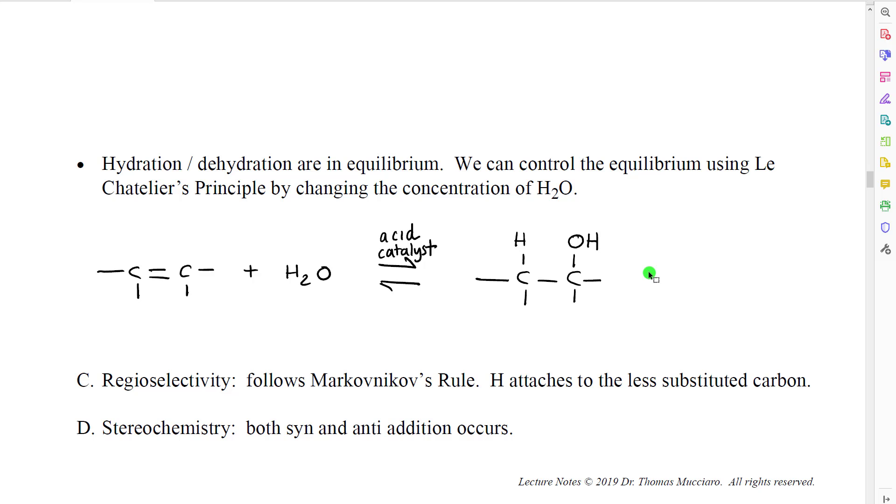So if we look at this, it turns out that hydration and dehydration are in equilibrium with each other. What we're actually doing here is controlling the equilibrium using Le Chatelier's principle by adjusting the concentration of water. So in the reaction as written above, if we start with an alkene, a high concentration of water, and an acid catalyst, that would favor shifting the reaction toward the right, toward the alcohol product.